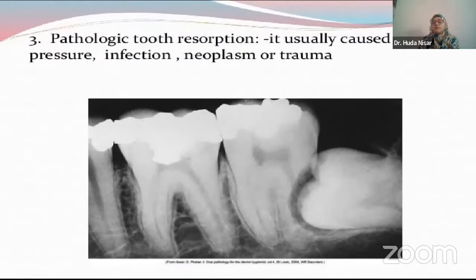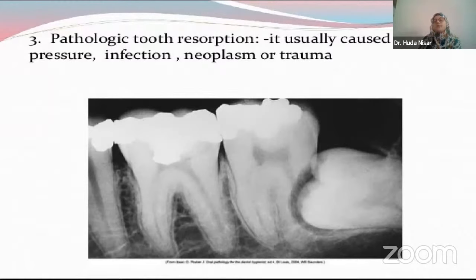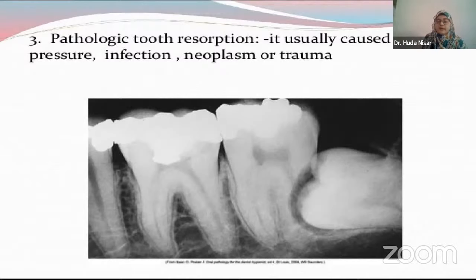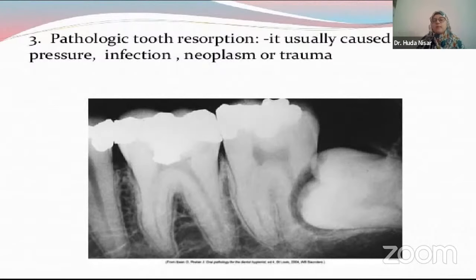Then we have pathologic tooth resorption — a case of mesoangular impaction which is leading to the resorption of the distal root of the mandibular second molar. This is very commonly observed in impacted teeth. Sometimes you will find that the wisdom tooth is not visible clinically, but when you take an OPG you'll observe it has progressed a lot and led to resorption of the second molar root — and in some cases it could also progress to resorption of many other teeth. In cases of abscess there will be rough root resorption. In neoplasms — cases of tumors and cysts — root resorption is very common and reported. Trauma can also cause root resorption.